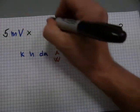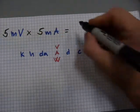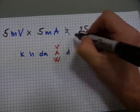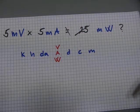For example, 5 millivolts and 5 milliamps will not make 25 milliwatts. It's not going to happen.